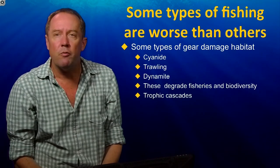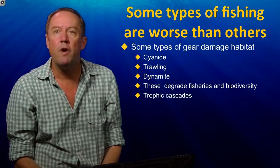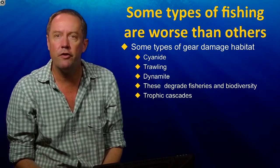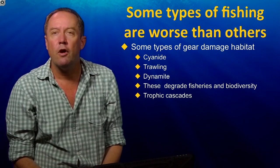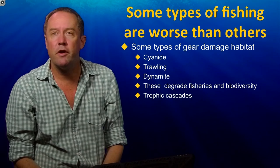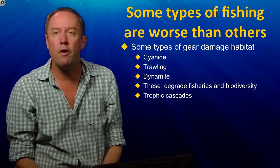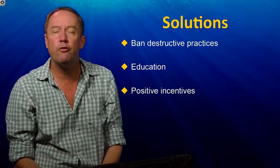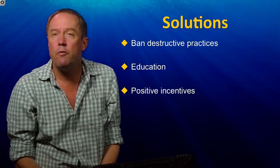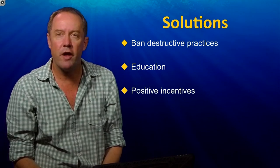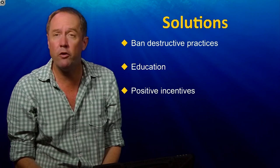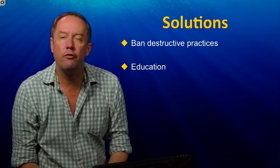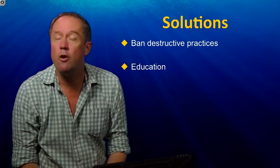Some types of fishing are certainly worse than others. Even with some management regimes, we have to be careful not to have fisheries that damage the actual habitat the fish live in — for example, trawling and dynamite fishing. These fisheries can cause not only habitat destruction, but also complete trophic cascades: if the top fish are removed, the rest of the whole ecosystem and food web are severely affected. The solutions to these destructive practices are simply to ban them, to educate people about the damage they cause to their long-term livelihoods, and to provide positive incentives to move toward more sustainable practices.